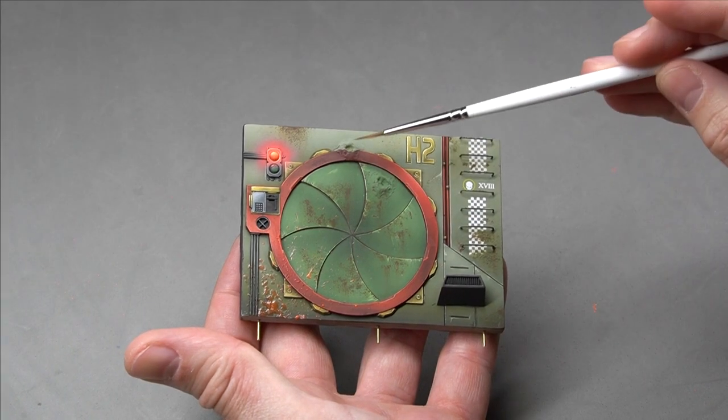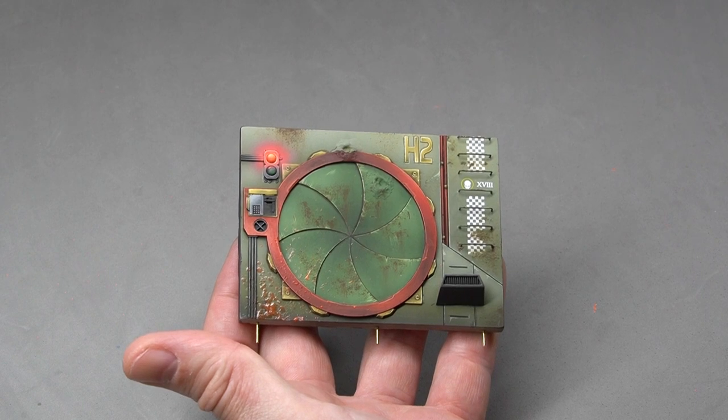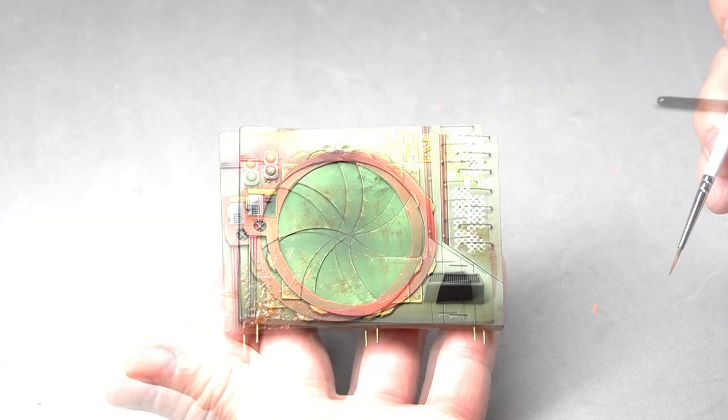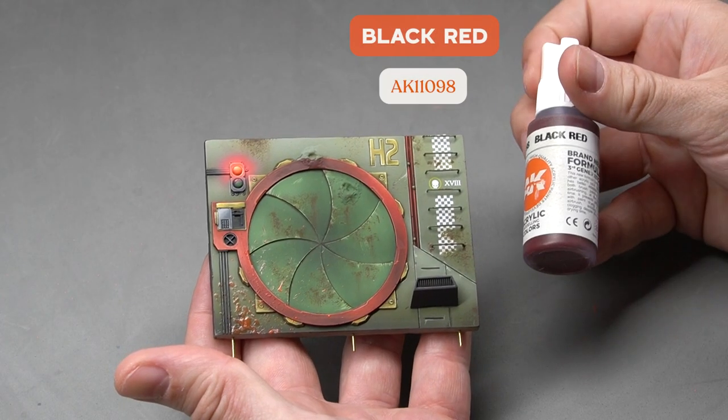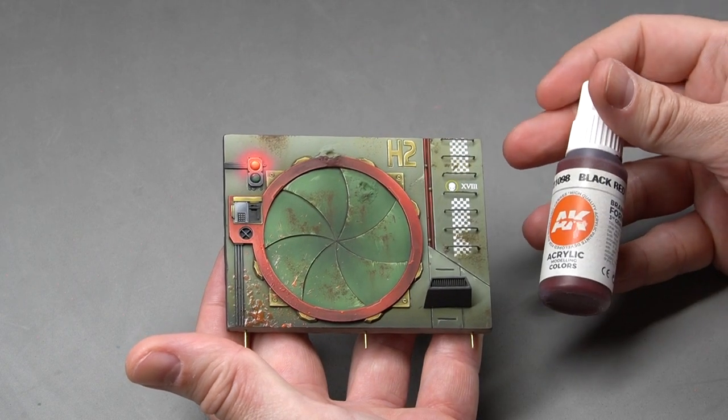Next, we're going to imitate the burned metal effect on the two impacts to finish our scene. We'll start with a layer of black red on the impacts to simulate the distant lighting.